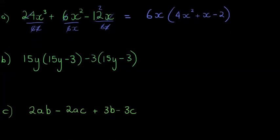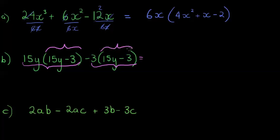Next is a challenging one. How many terms do I have? There are two terms. What factors do these terms have in common? Here I notice I have a whole bracket in common — not just a single factor, but an entire bracket. So I can take out the whole bracket (15y − 3) as a common factor.